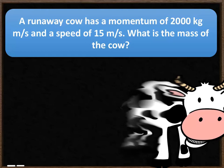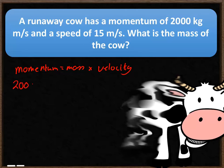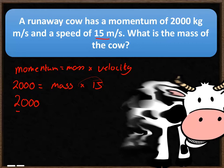The formula is momentum equals mass times velocity. We know the momentum is 2,000 kilogram meters per second and the velocity is 15 meters per second, but we don't know the mass. So: 2,000 equals mass times 15. Dividing both sides by 15 gives mass equals 2,000 divided by 15, which rounds to 133 kilograms.